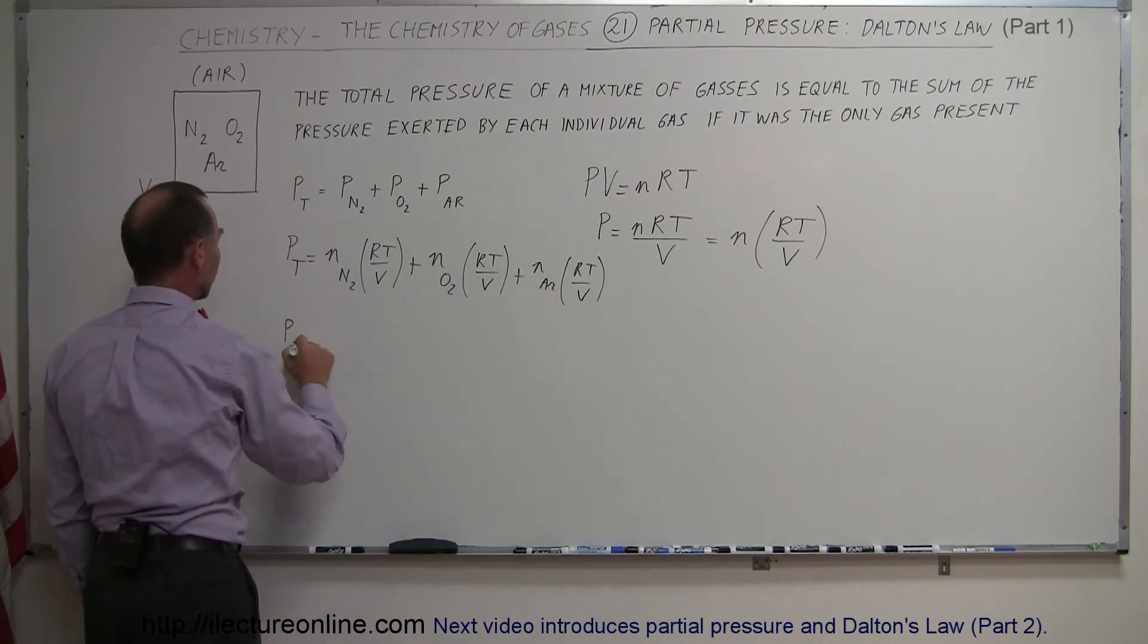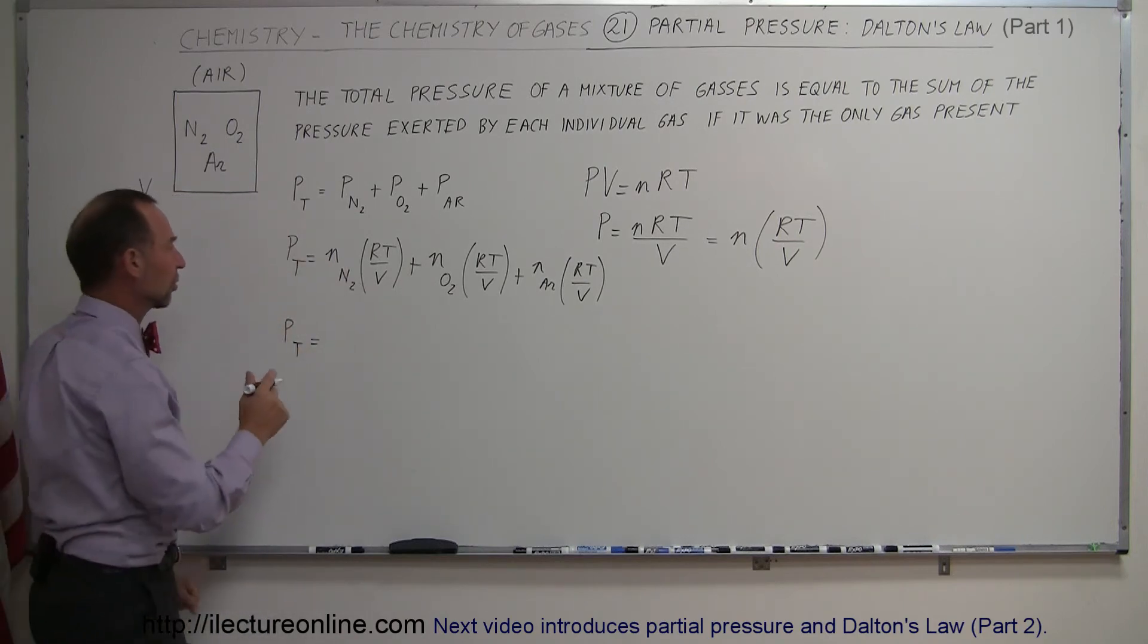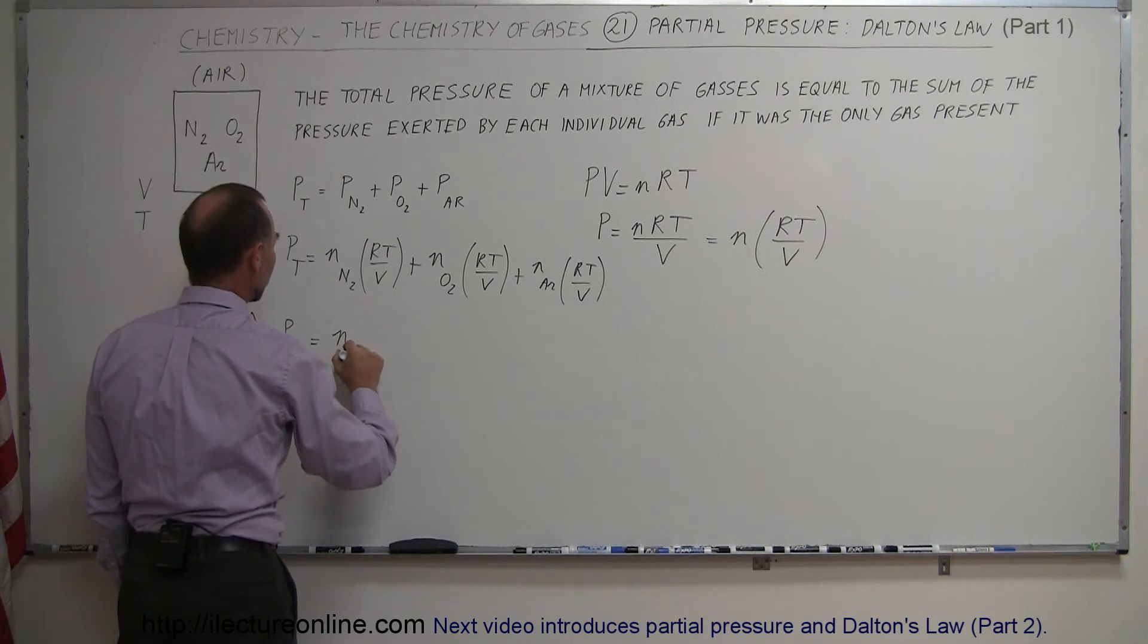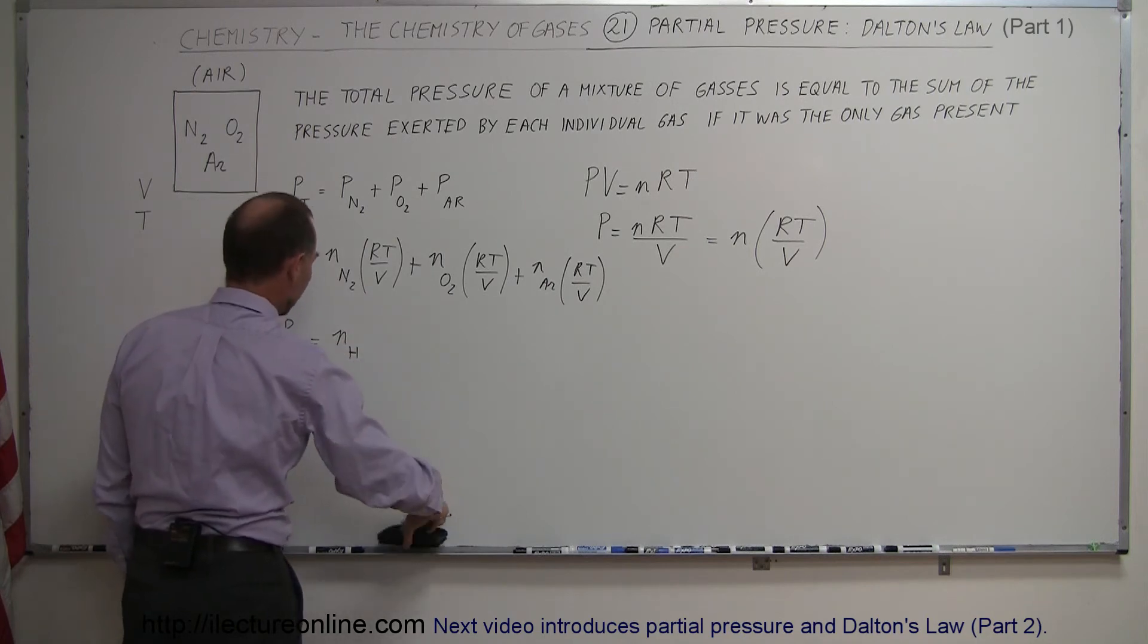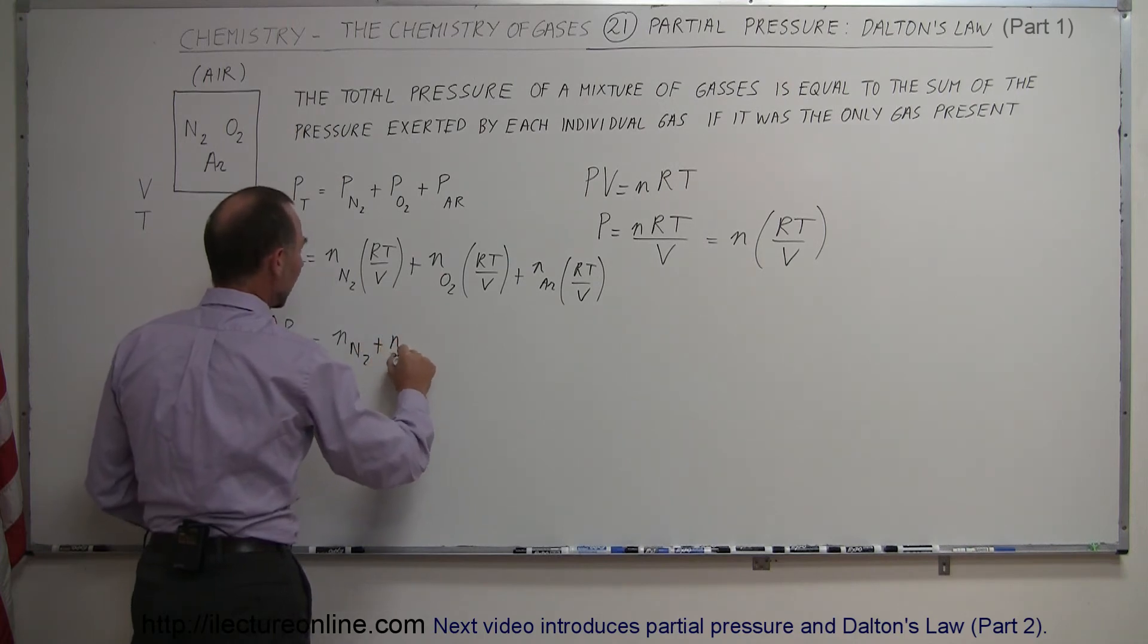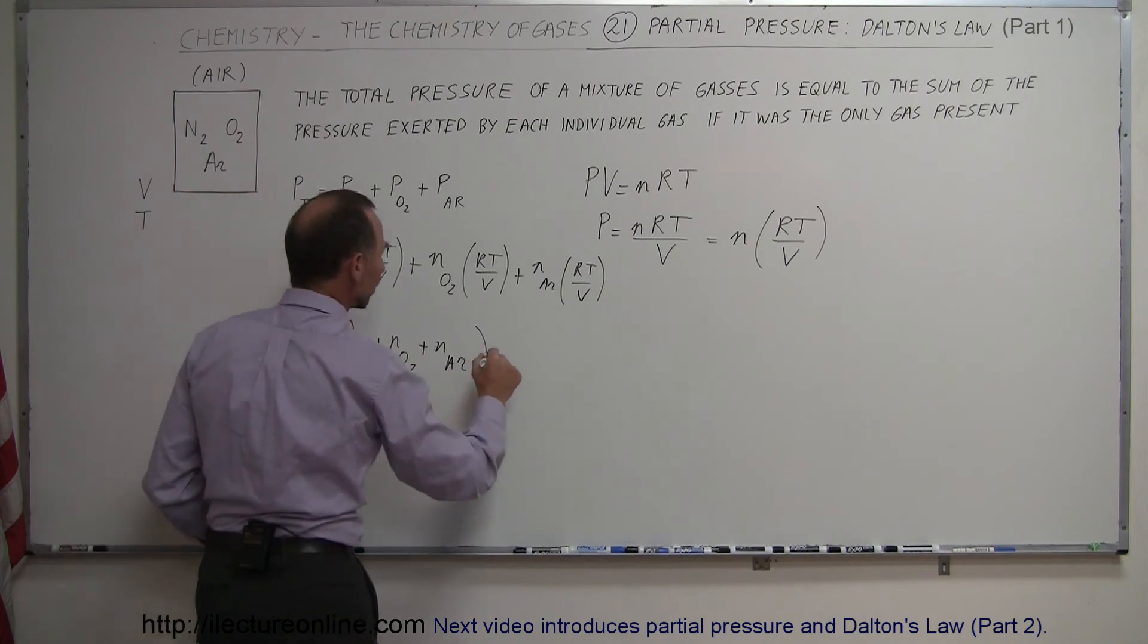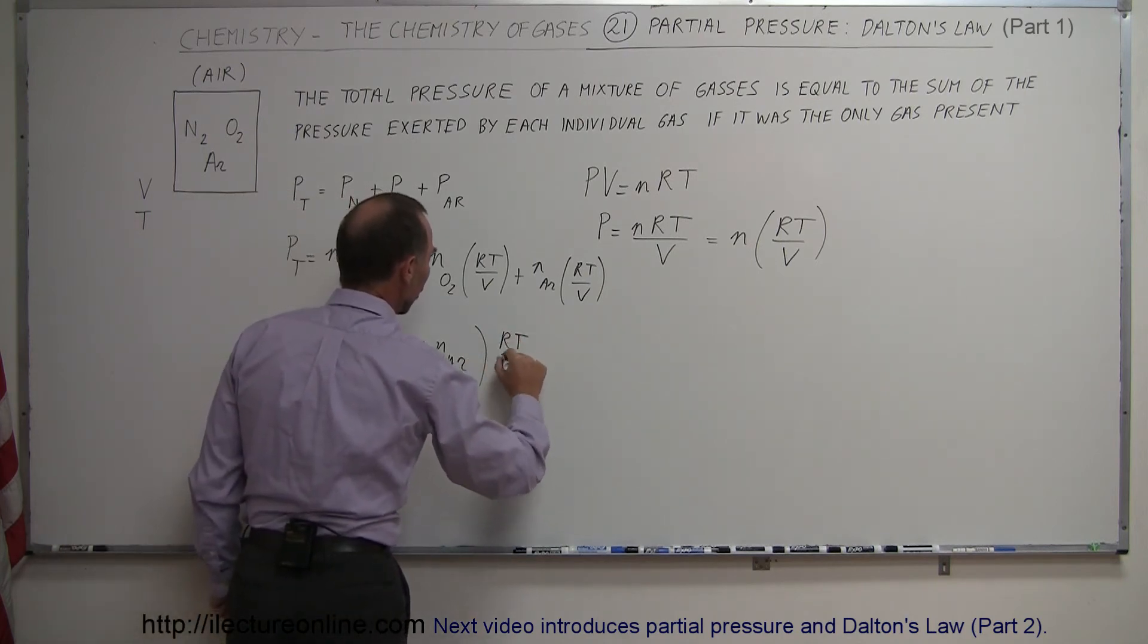So we can now factor out the RT over V, so simply we can say that the total pressure in a gas made up of a number of gases, or mixture of gases, is equal to the number of moles of each gas. I see N but I write H, that's no good. So N2 plus the number of moles of oxygen, plus the number of moles of argon, the whole thing multiplied times RT over V.